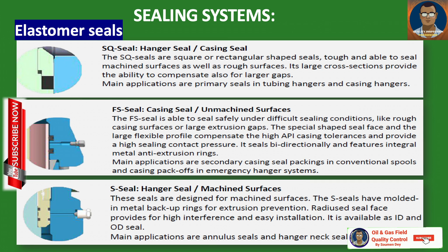The last important topic is the types of seals used in this system, as seals have a very important role in controlling pressure and stopping flow. Two categories: elastomer seals and metal seals. For elastomer seals, the first type is the Eschew seal (hanger seal or casing seal) — square or rectangular shaped, tough, able to seal machined surfaces as well as rough surfaces. Its large cross-section provides the ability to compensate for larger gaps. Main applications are primary seals in tubing hangers and casing hangers.